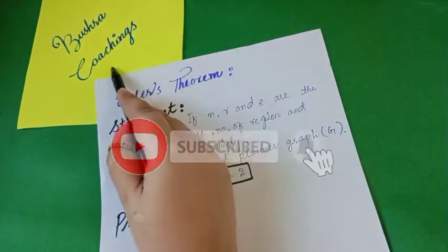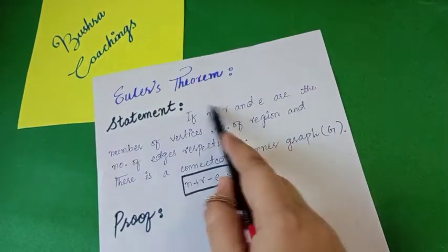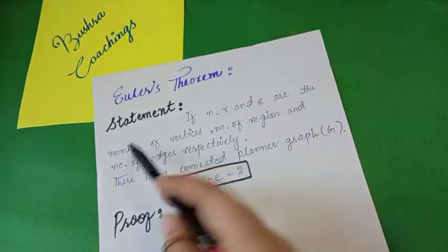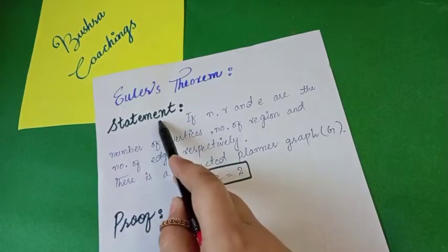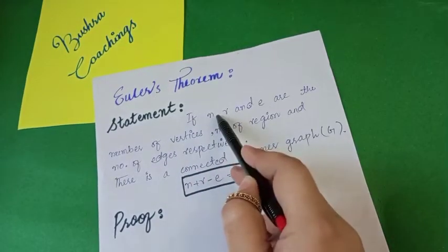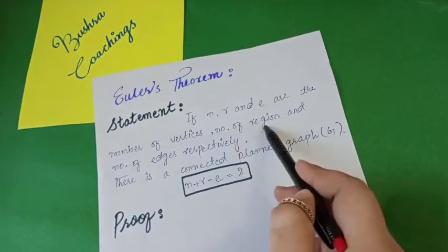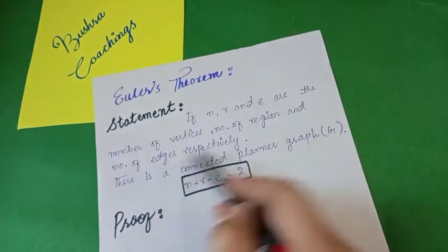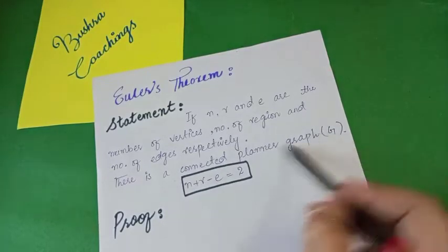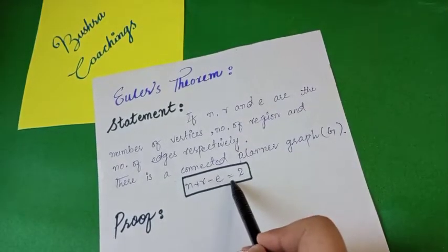Assalamu alaikum, you are watching Bushraal's Coaching and today we will discuss Euler's Theorem — what it is and the proof of Euler's Theorem. The statement says: if N, R, and E are the number of vertices, number of regions, and number of edges respectively, in a connected planar graph G, then the formula is N plus R minus E equals 2.